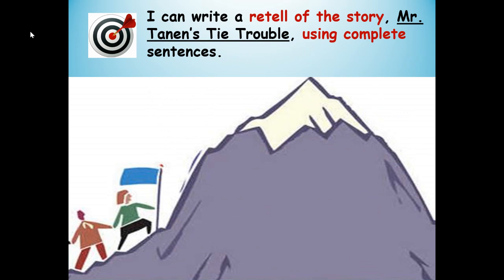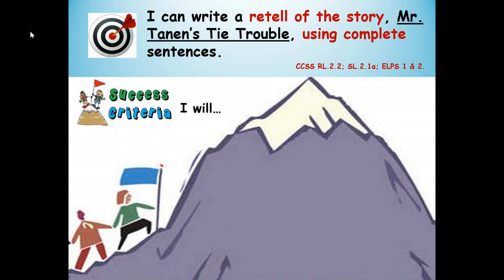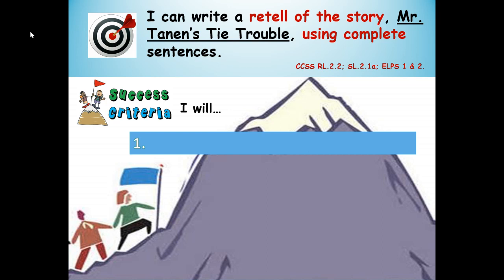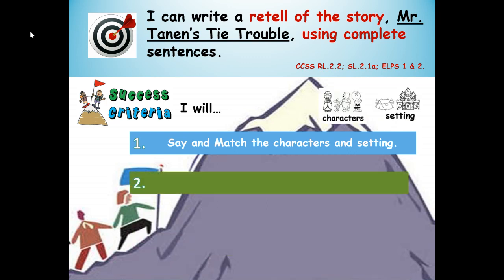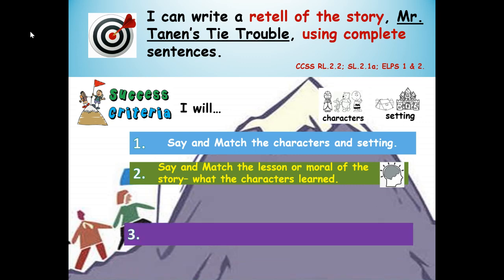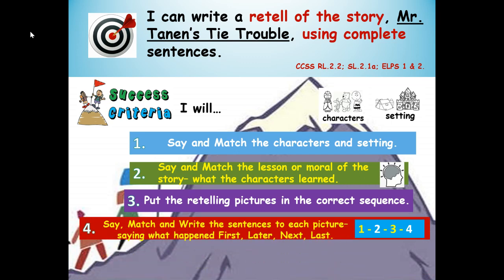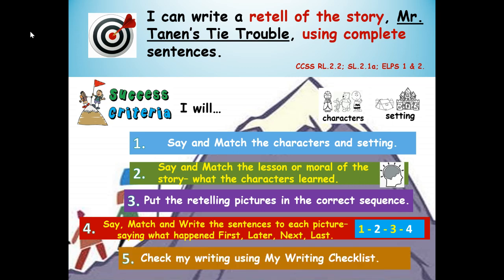Here's our learning target: I can write a retell of the story Mr. Tannen's Tie Trouble using complete sentences. Success criteria — that means how will you know you're successful. Here are our steps to success: you're going to say and match the characters and setting in the story, say and match the lesson or moral of the story, put the retelling pictures in the correct sequence or order, say and match and write the sentences to each picture saying what happened first, later, next, and last, and finally take your writing and check it using the writing checklist.